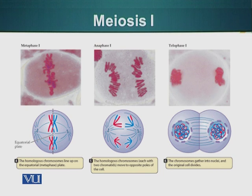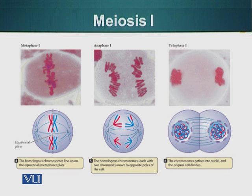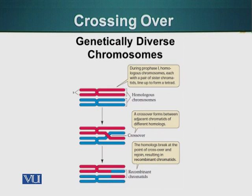Anaphase of meiosis 1 differs from mitosis: in mitosis, the sister chromatids split apart from a single chromosome, whereas in anaphase of meiosis 1, the homologues split apart and travel to opposite poles. Telophase follows anaphase 1 — in telophase, the nuclear envelope starts to reform and the chromosomes start to decondense and loosen up. As mentioned, there is an exchange of pieces, or little fragments, between the homologous chromosomes.